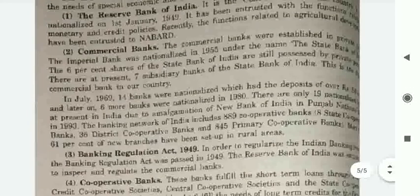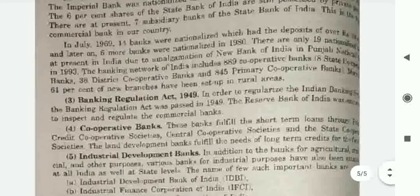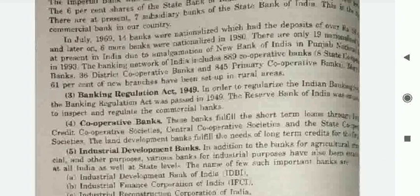Second, the commercial banks: these were originally established in the private sector. The Imperial Bank was nationalized in 1955 under the name of the State Bank of India. About 6% shares of the State Bank of India are still held by private persons. There are 7 subsidiary banks to the State Bank of India, making it the country's biggest commercial bank. In July 1969, 14 banks having deposits of 50 crores were nationalized, and later 6 more banks were nationalized in 1980. There are 19 nationalized banks at present in India; New Bank of India was merged with Punjab National Bank in 1993.